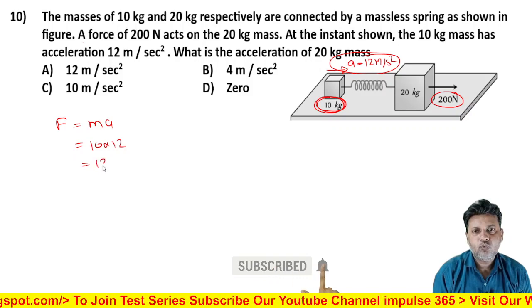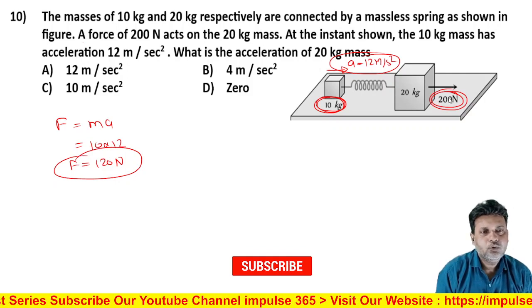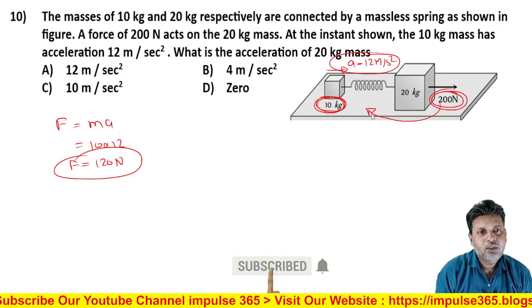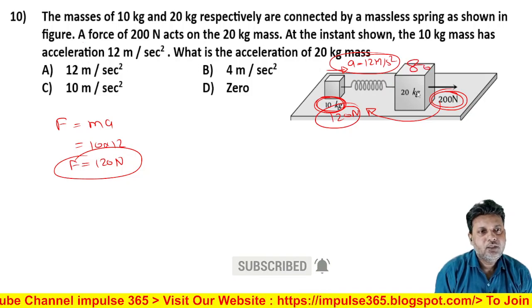To F = ma kahenge. Mass kitna hai 10 kilogram, accelerate kar raha hai 12 meter per second square se, to 120 newton ki requirement hai iski. To 200 newton to lagaya gaya, usme se 120 to yahi le le raha hai, to bacha kitna 80 newton. To 80 newton isko milega.